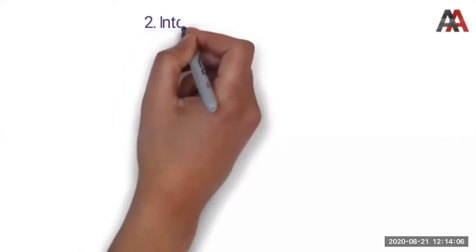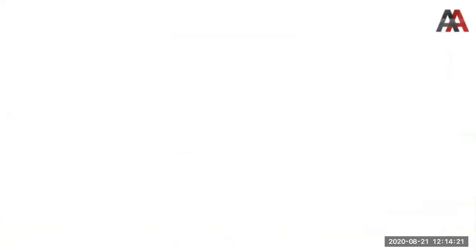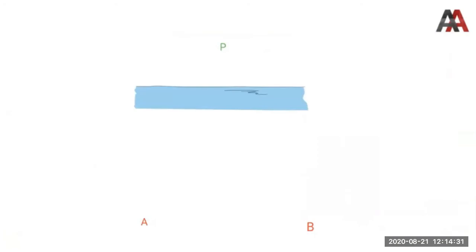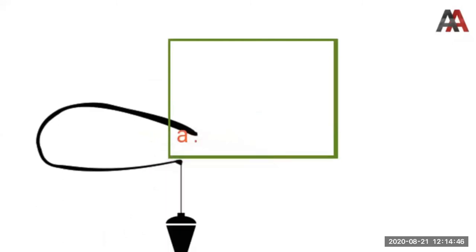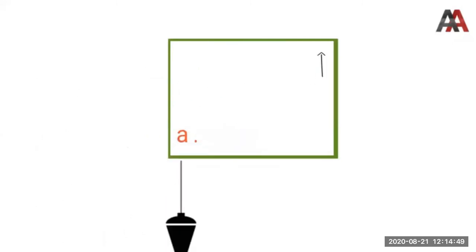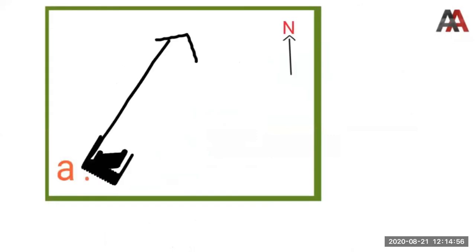The second method is the intersection method. In this method, we plot points that we cannot reach. For example, if point P is across a river and our stations A and B are on this side, we adopt this method for point P. We set the plane table on station A, level, center, and orient it, fix the paper sheet, plot station A, mark the north direction in the top right corner, sight point B, and draw a ray from A.